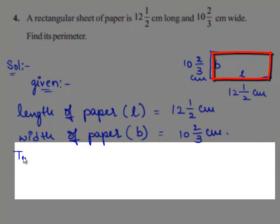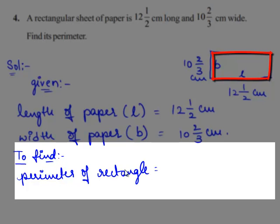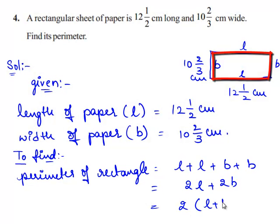So now we need to find the perimeter of the rectangle. Perimeter of a rectangle is the sum of all sides of the rectangle. That is, a rectangle has two lengths and two widths. So perimeter of the rectangle is L + L + B + B, that is equal to 2L + 2B, which gives 2 times (L + B). So this implies 2 times (12 1/2 + 10 2/3).